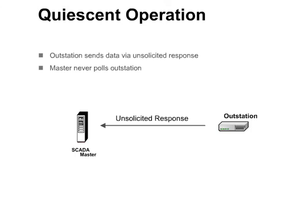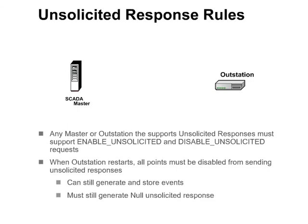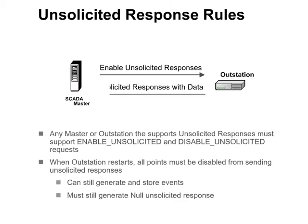The DNP-3 specification requires that any master or outstation device that supports unsolicited responses must also support the enable and disable unsolicited response requests. Furthermore, the specification states that when an outstation restarts, all points must be disabled from sending unsolicited responses. The outstation must still send its initial null unsolicited response — that is, an unsolicited response with no data. However, it may not send unsolicited responses with data until it receives an enable unsolicited response request from the master. Note that the outstation may still be generating and storing events before it receives the enable unsolicited response request; it is just not allowed to send those events via unsolicited responses.